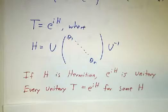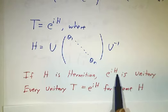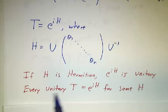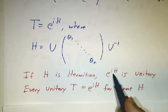In other words, if I give you any Hermitian matrix, e to the i times that matrix is unitary. If I give you any unitary matrix, you can find a Hermitian matrix H, that this is e to the iH. You can take exponentials, you can take logs.